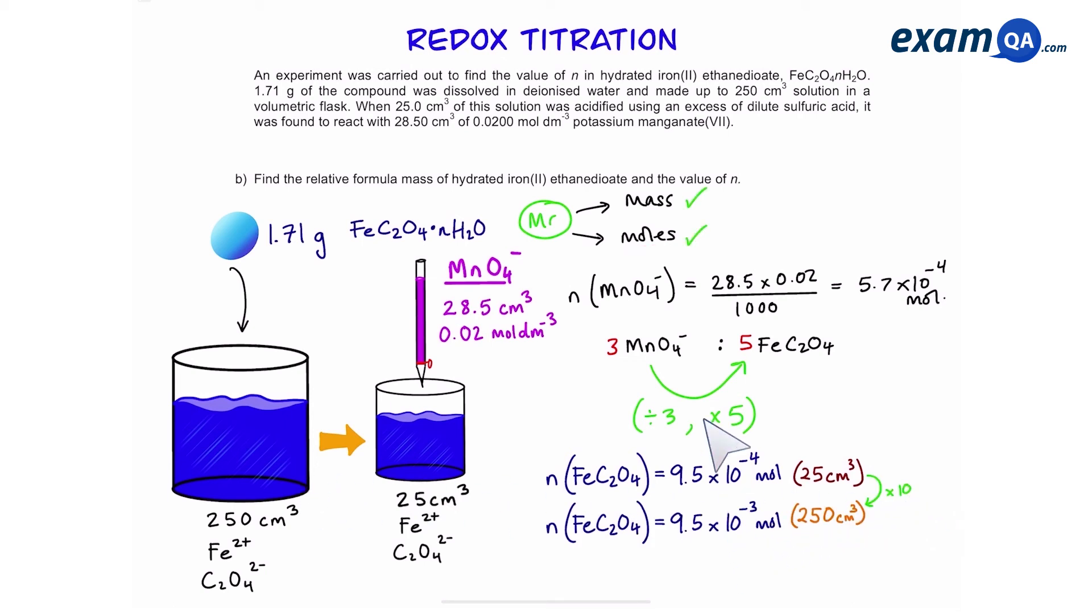So now we have both the mass and the moles of FeC₂O₄. Let's work out the Mr by doing mass divided by moles. And that should give us an answer of 180.